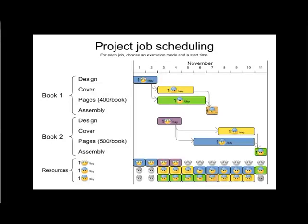Welcome to the OptoPlanner example of project job scheduling. Project job scheduling is a planning use case which you'll find in many manufacturing companies, and also anyone dealing with projects might encounter this problem.